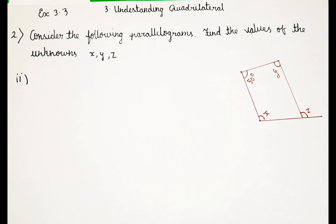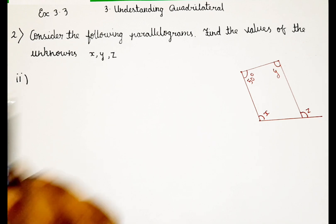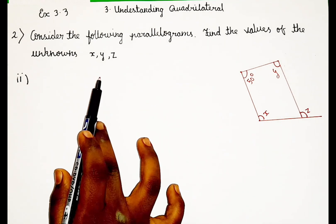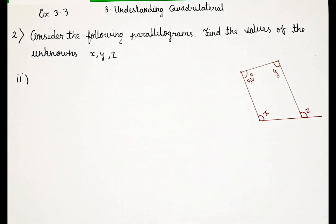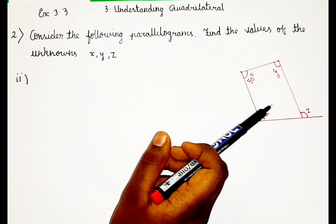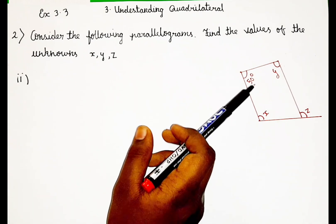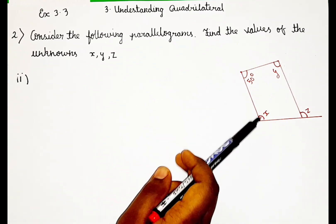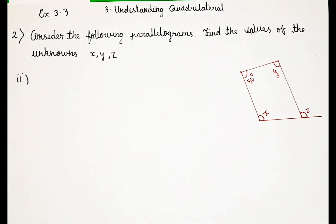So guys, let's read the question. Consider the following parallelograms. Find the values of unknown x, y, z. In this question we have a parallelogram and we are going to be finding the value of x, y and z. First we shall find the value for x.